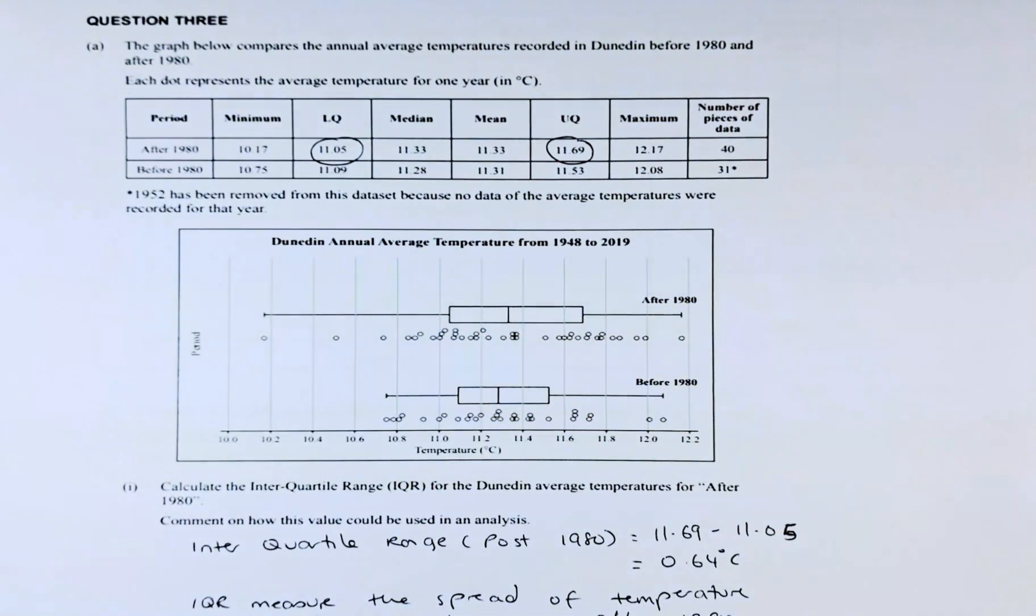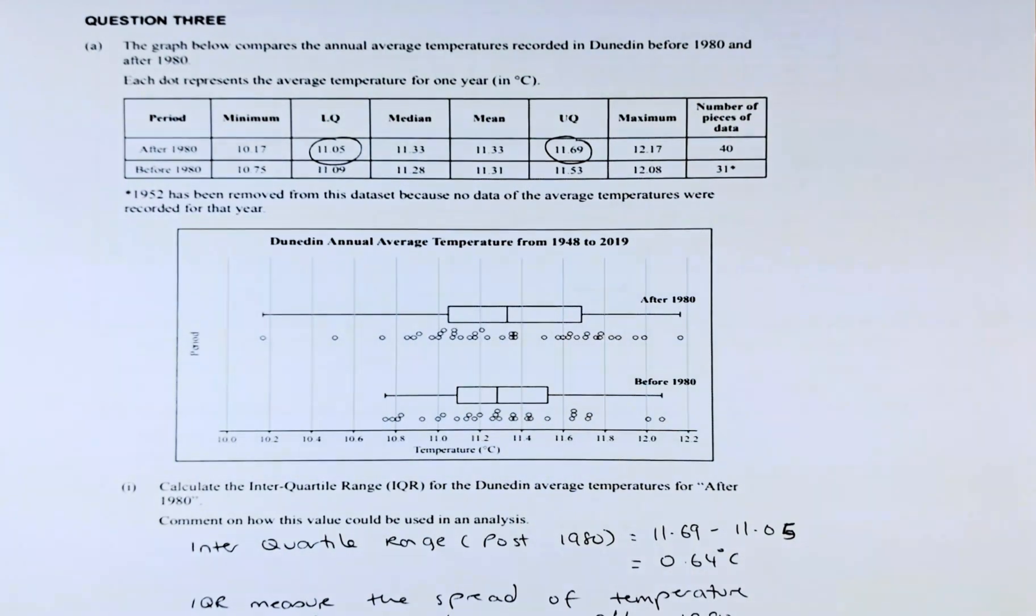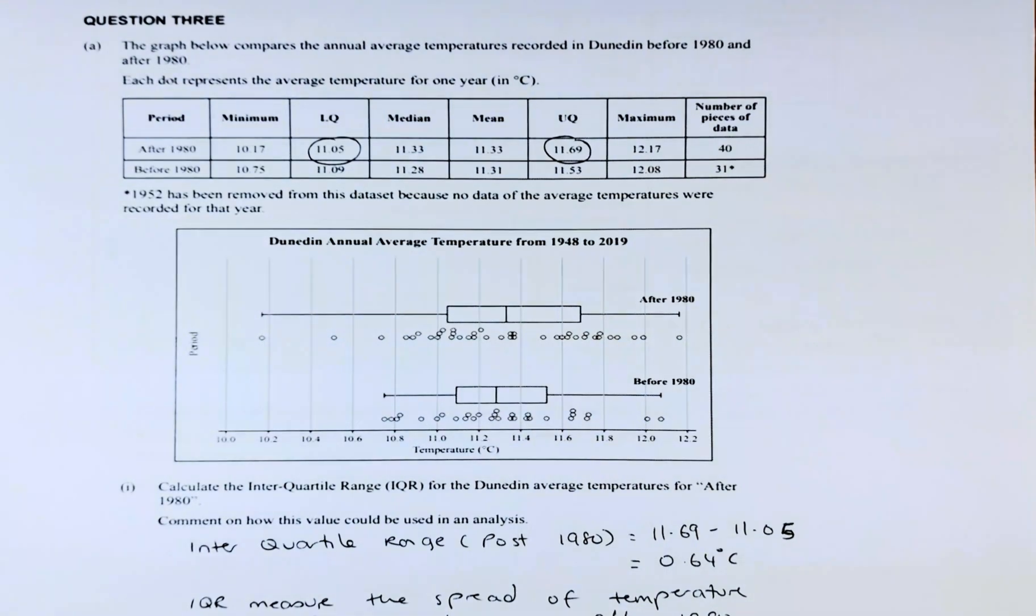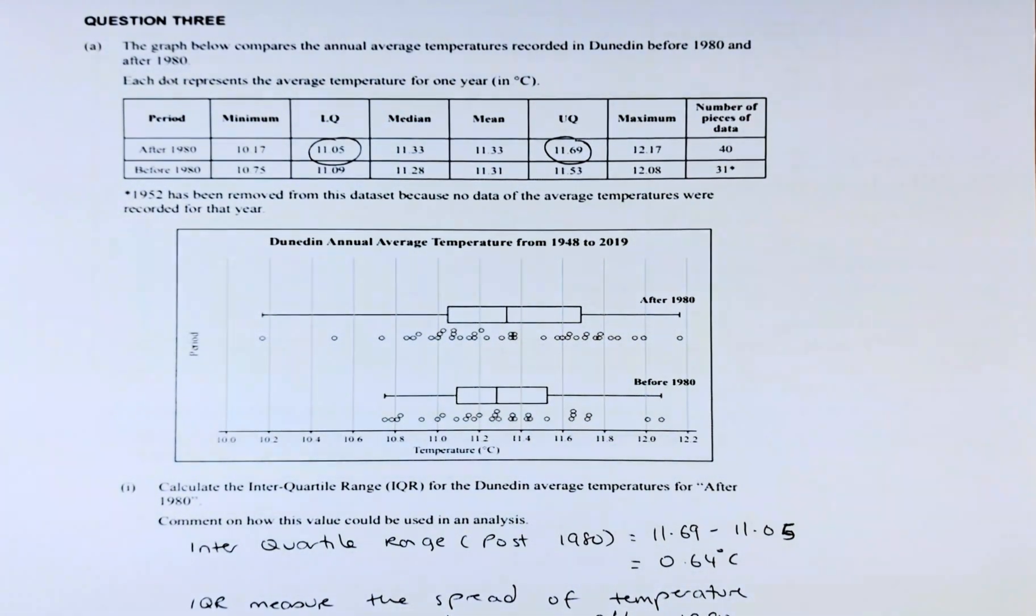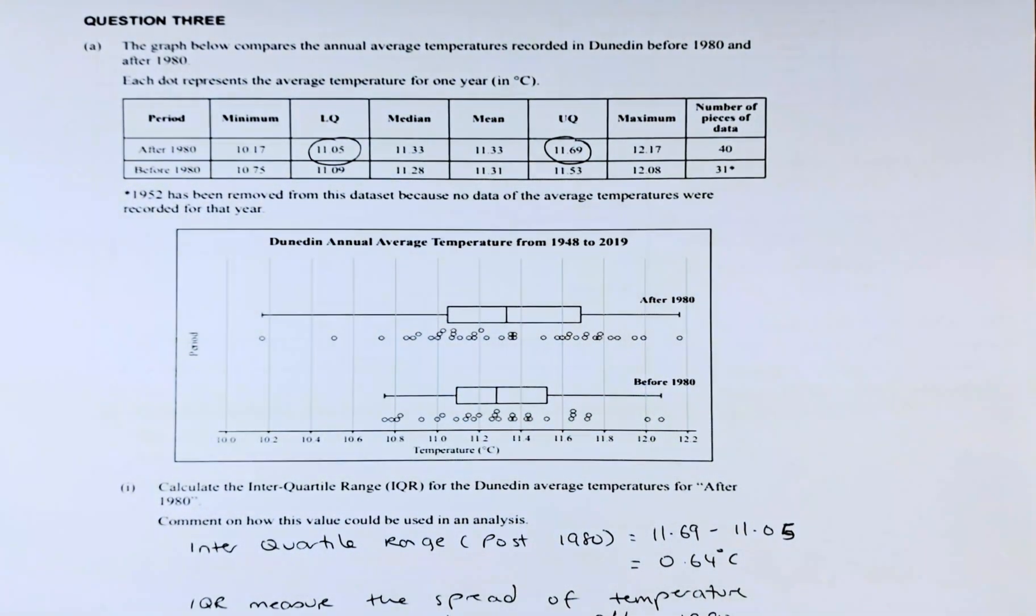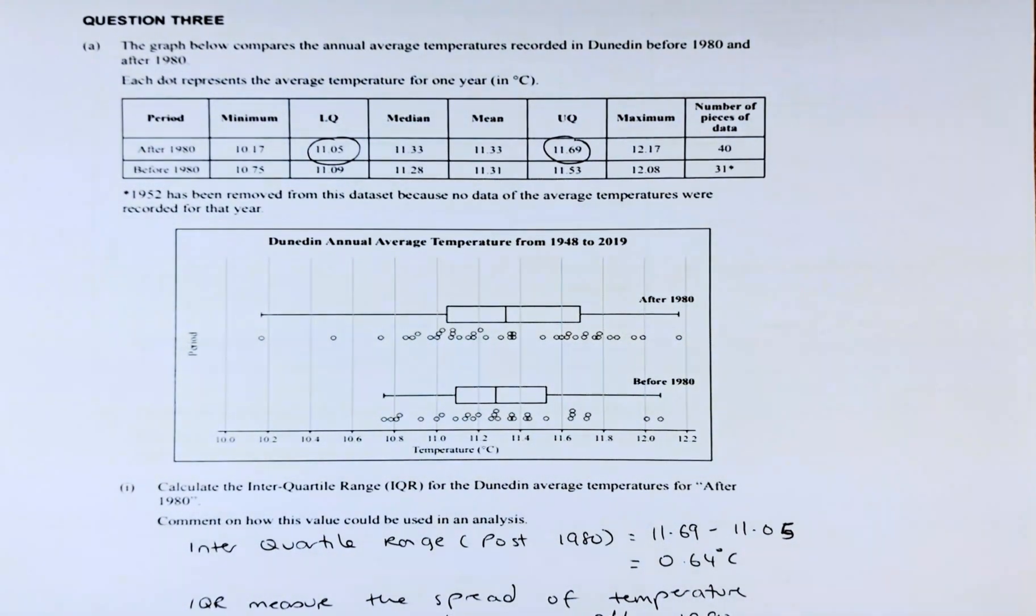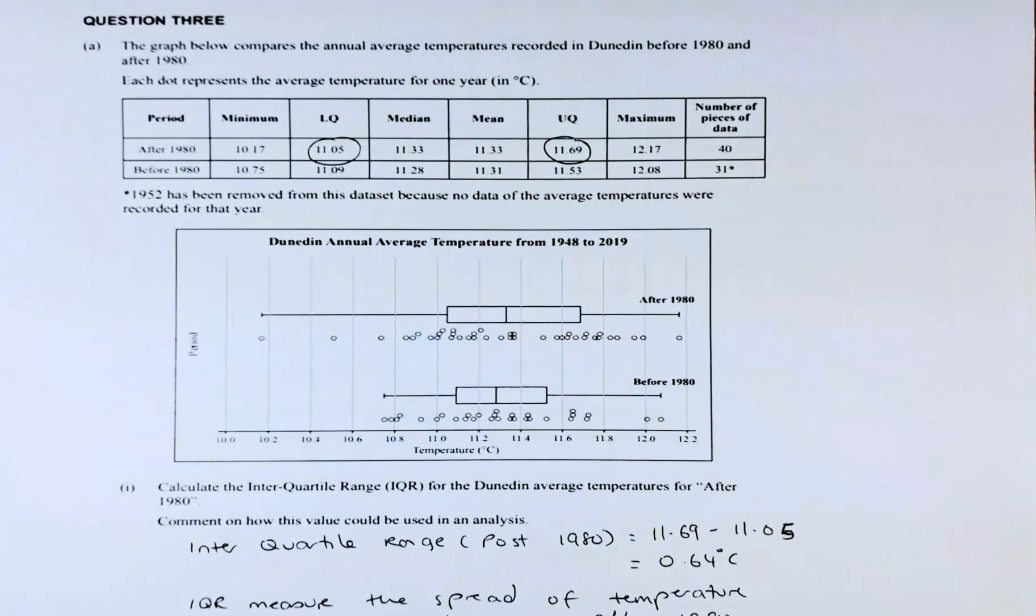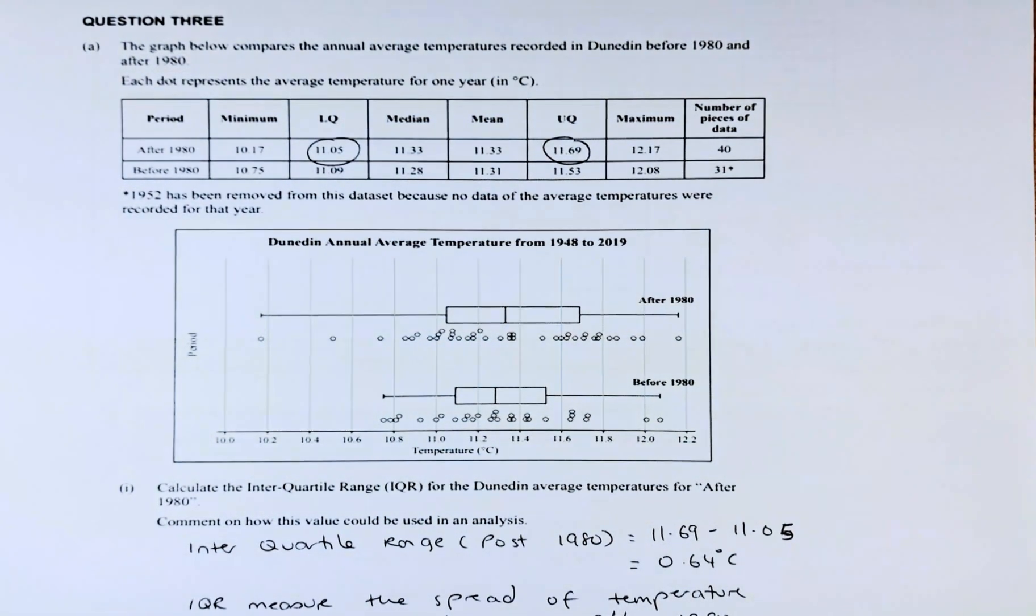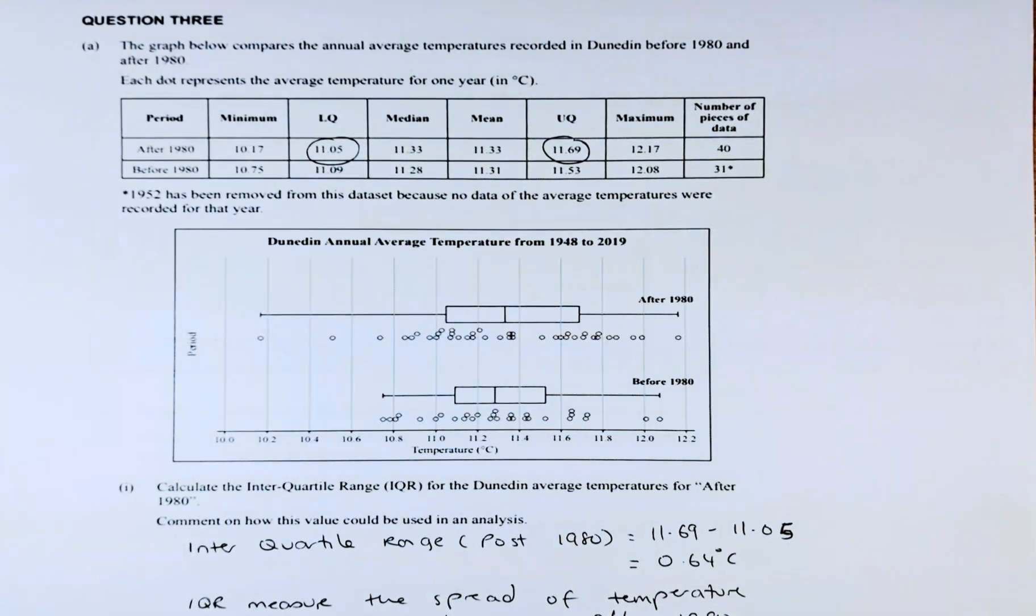Good day! In this video, we are looking at question 3A of the 2022 Level 1 NCEA Chance and Data paper. Without further ado, let's read the question. The graph below compares the annual average temperature recorded in Dunedin between 1980 and after 1980. Each dot represents the average temperature for one year in degrees Celsius. Please note that 1952 has been removed from the dataset because no data of the average temperature were recorded for that year.